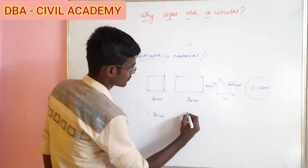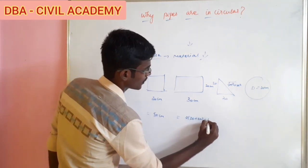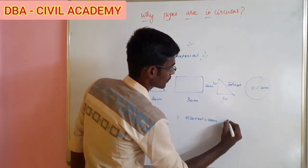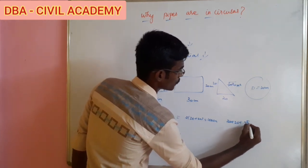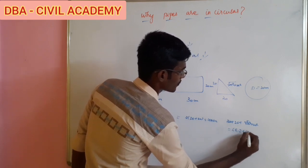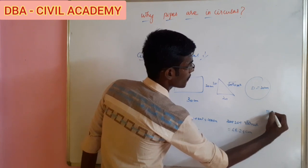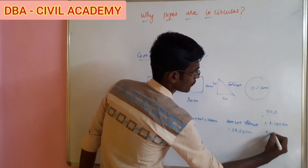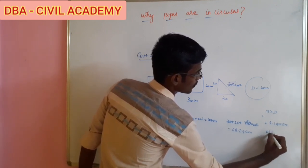Next, for the rectangle. One rectangle calculation gives us the square root of 20 squared plus 20 squared — if you solve it, you have 68.28cm. Next, for the circular shape: 3.14 into 20 gives 62.8cm.